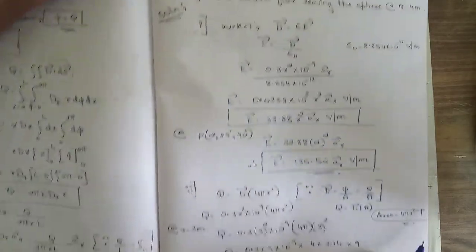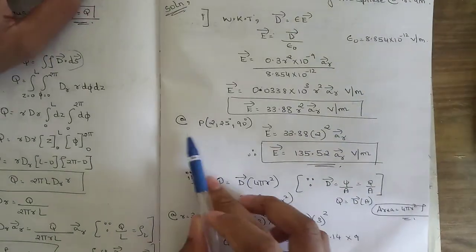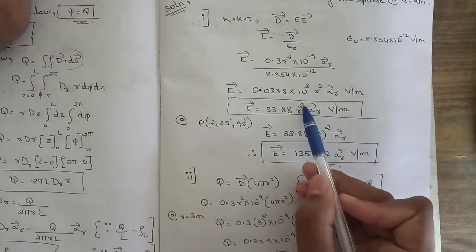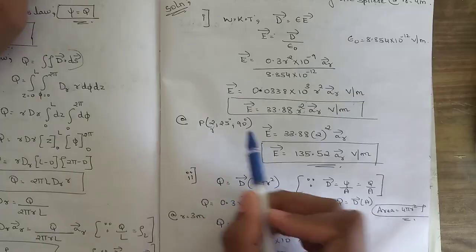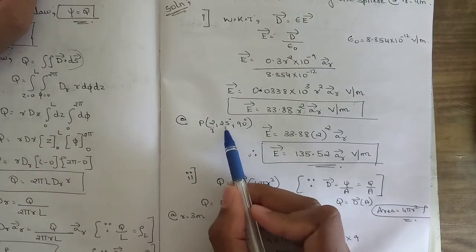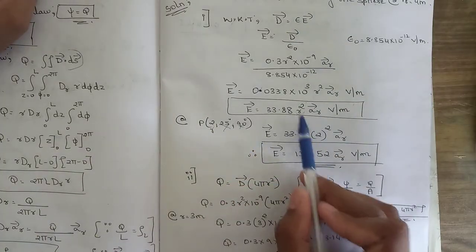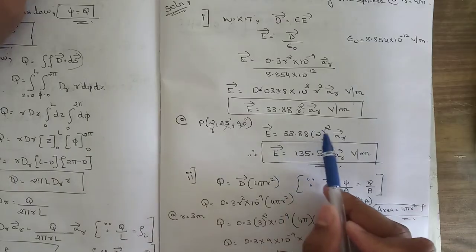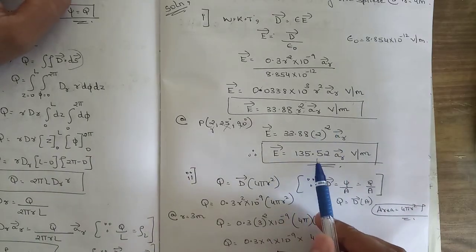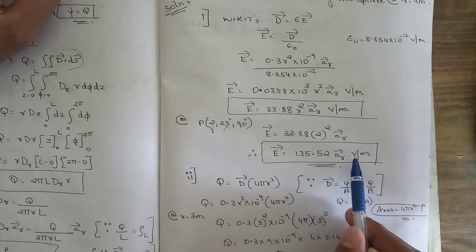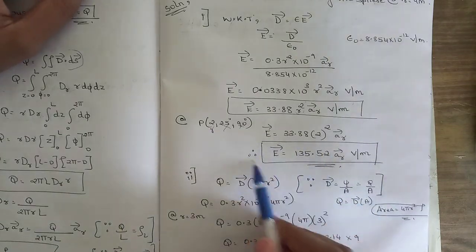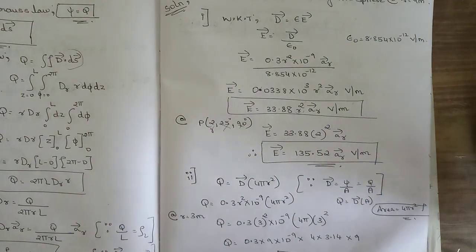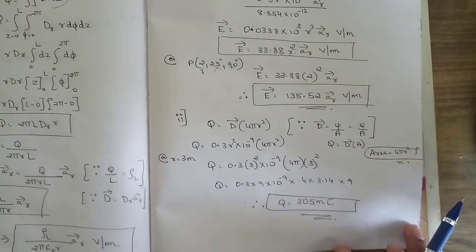We now substitute this E at point P(2, 25°, 90°). Since the expression depends only on r, we use r = 2. So E = 33.88 × 2² = 33.88 × 4 = 135.52 aᵣ vector volts per meter. This is the answer for the electric field E at point P.